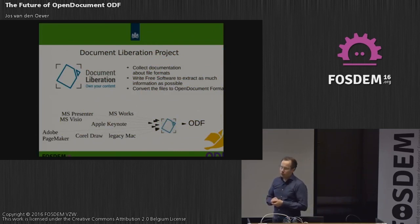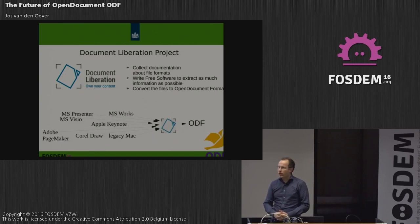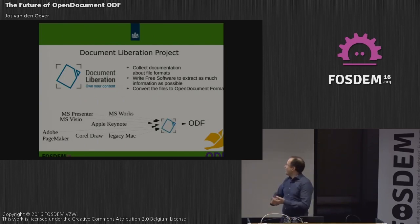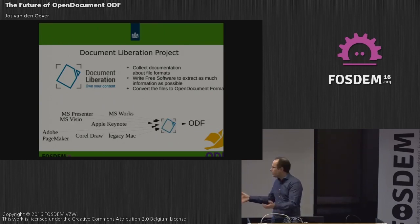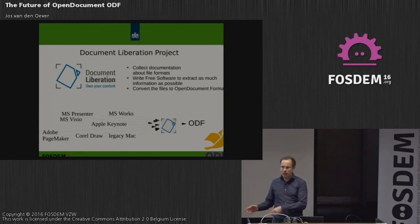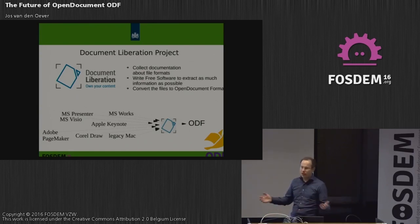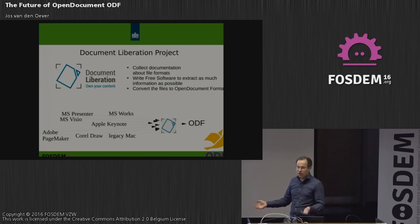Another example that will help ODF adoption is the Document Liberation Project. They take old files for which the software has long been outdated, look at all the binary details of the file format, and write a translator to convert it to ODF. They chose ODF because it has so many features that you can translate almost anything into ODF, and it's a stable open standard with very good support across a wide range of software.